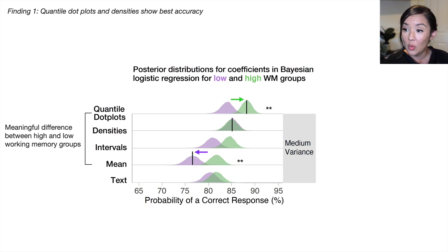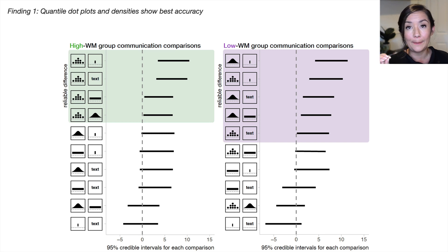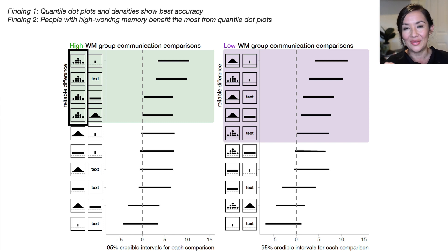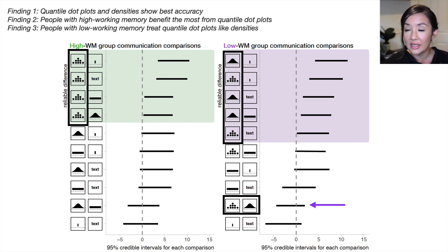I also want to point out for people with low working memory capacity who viewed the mean plot, they performed the worst out of all the conditions. We can actually compare each visualization to one another for the different groups, and that's what these plots are showing you here. For all of the quantile dot plots, people with high working memory capacity performed better when they saw the quantile dot plots versus the mean, versus the text, versus the interval, and versus the density. If we look at low working memory capacity, what we find is that both the density plots and the quantile dot plots were better than the mean, text, and interval in some cases. But what I really want to point out is that there was no meaningful difference between the quantile dot plot and the density for people with low working memory capacity. So this indicates to me that if an individual has low working memory capacity, they are going to treat a dot plot like a density plot.